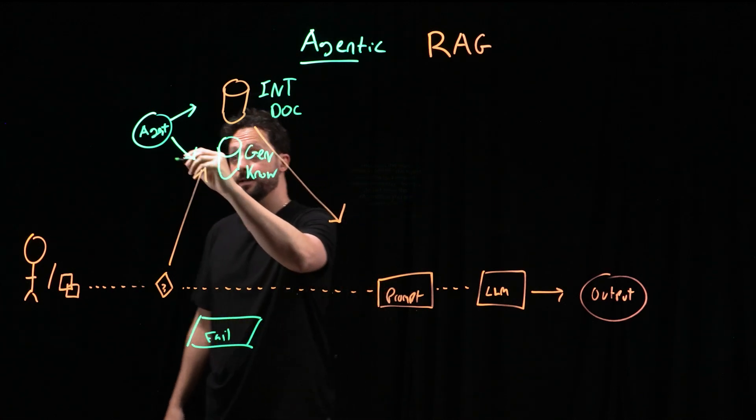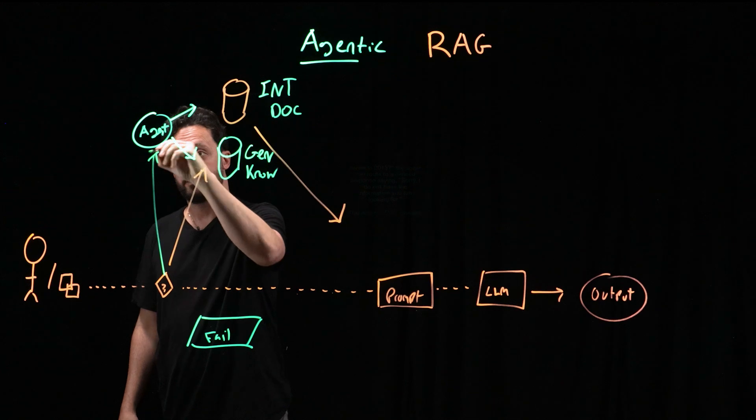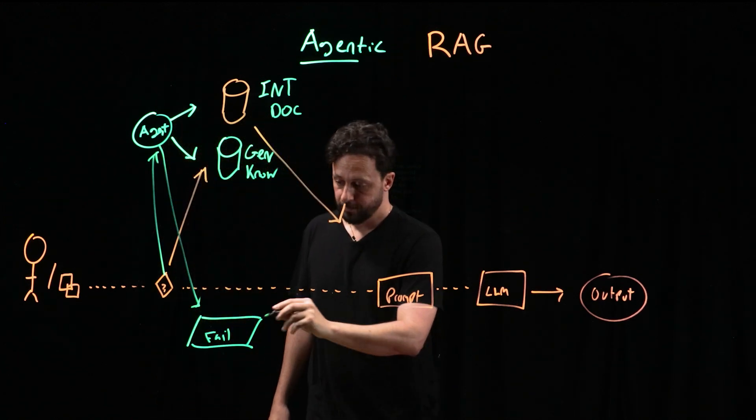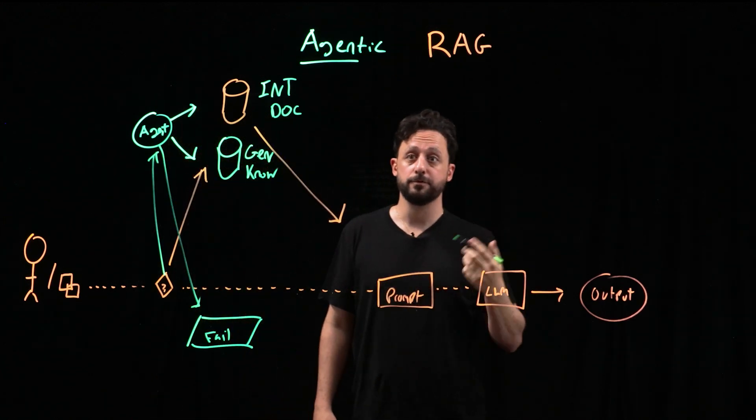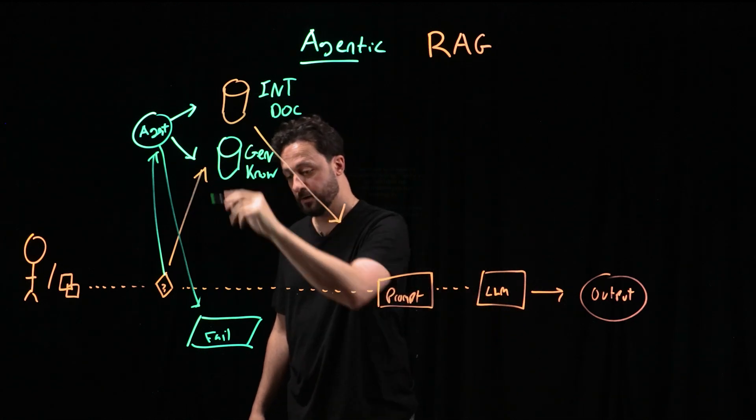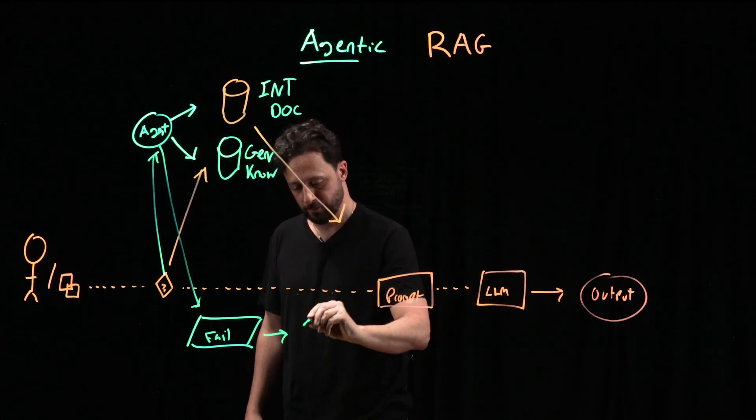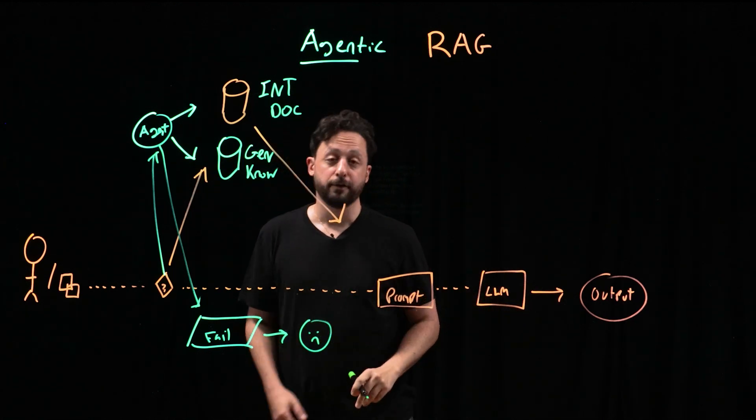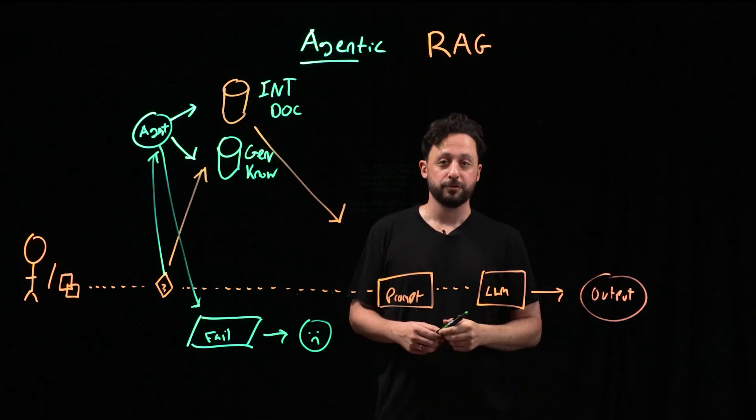So because the agent is able to recognize the context of the query, it could recognize that it's not a part of the two databases that we have. It could route it to the failsafe and return back, I don't have the information you're looking for.